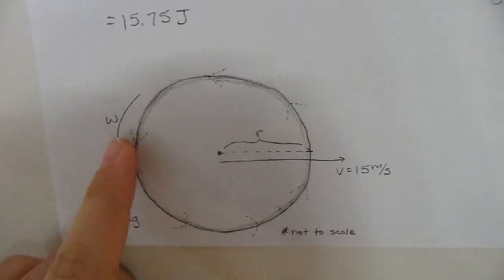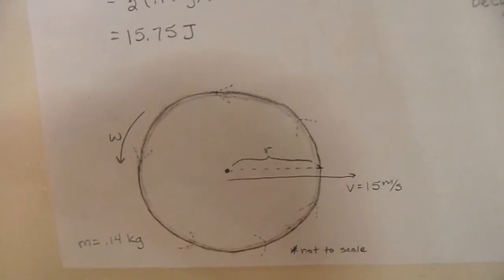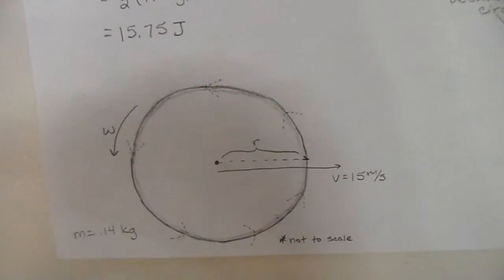You're going to get the same radius. And we also noted that the angular speed is going to be the same because it is of uniform mass and uniform radius.